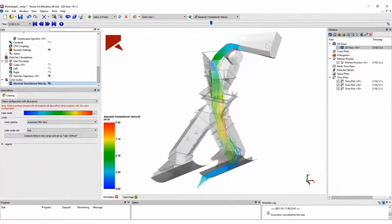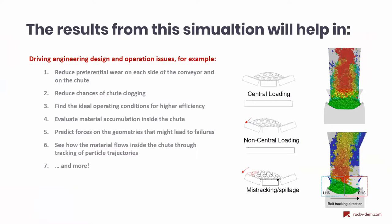With this, I will end this demonstration. As we could see from the results we can get from these simulations: we can reduce preferential wear on each side of the conveyor and on the chute; we can reduce the chances of chute clogging; we can find the ideal operating conditions for higher efficiency, such as changing the mass flow rate or belt velocity; we can evaluate how much mass is inside the chute; we can predict forces on the geometries which might lead to failures; and we can see how material flow can be causing an imbalance on the receiving conveyor — and much more.